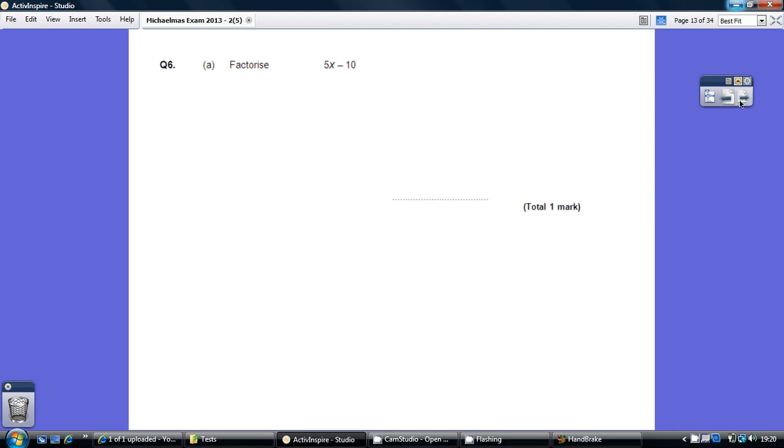Question six. Remember what factorizing means - this means putting the brackets back in. So start off by trying to get the number at the front. What's the biggest number that goes into both 5 and 10? Well, that's 5. So you pop your 5 there and open up your bracket. Five times what gives us 5x? Well, that's x, because 5 times x is 5x. Five times what gives us minus 10? Well, that's minus 2, because 5 times minus 2 is minus 10.